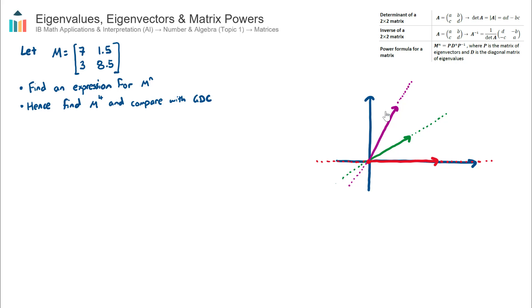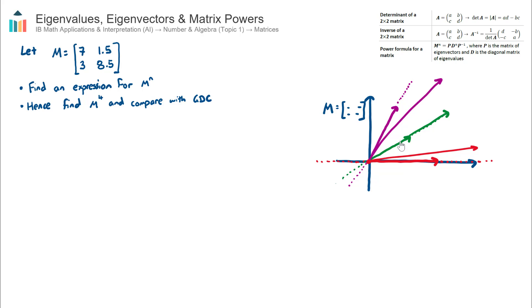Let's say that we applied a transformation matrix M — a two by two — to these vectors. When we apply this transformation matrix, it moves vectors around: it might rotate them, stretch them, or reflect them. Let's say the red vector turned into something like this, the green vector turned into something like this, and the purple vector turned into something like this. Out of these three transformations, the green one stands out because it doesn't move off its span line.